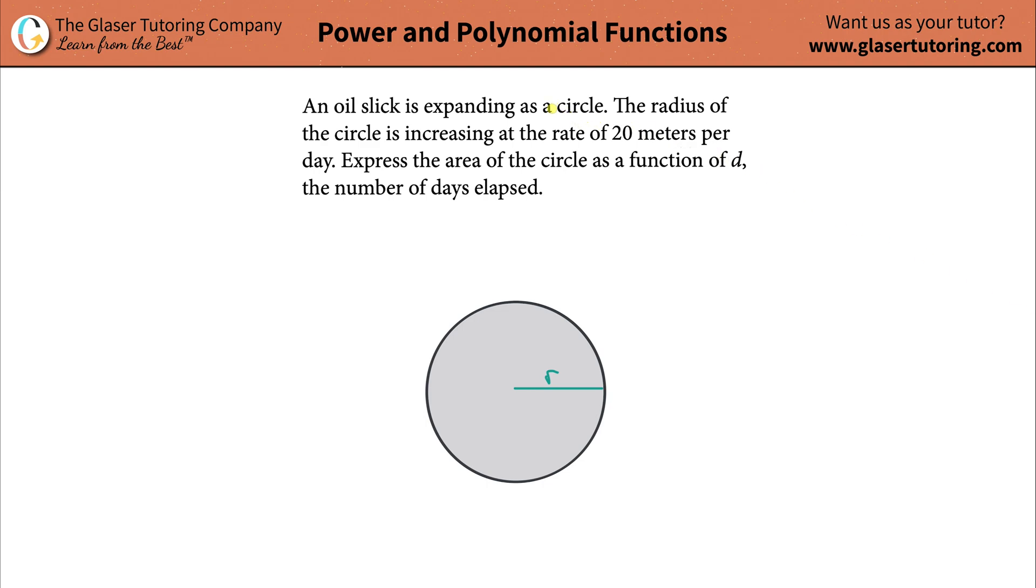An oil slick is expanding as a circle. The radius of the circle is increasing at a rate of 20 meters per day. Express the area of the circle as a function of d, the number of days that are elapsed.